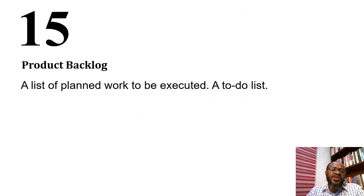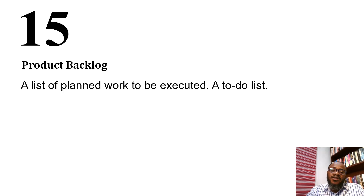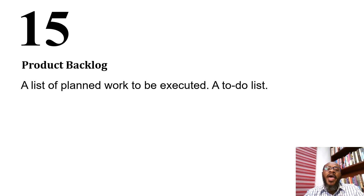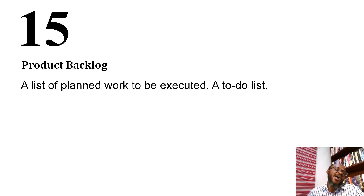The product backlog is essentially a list of planned work to be executed — more or less a to-do list. On electronic boards, the to-do column is your product backlog, containing all planned items that are constantly being prioritized by the product owner.